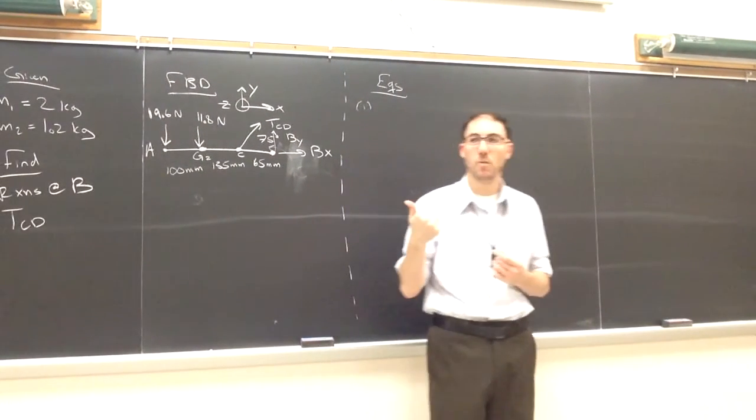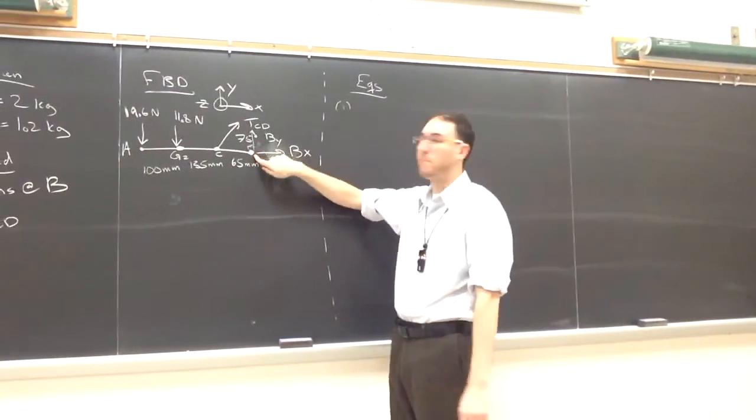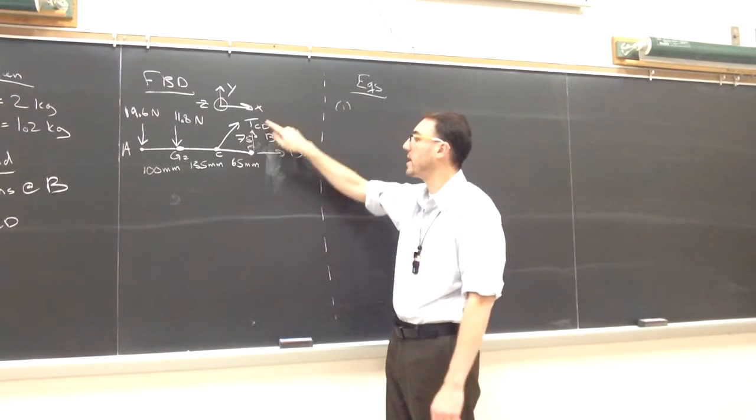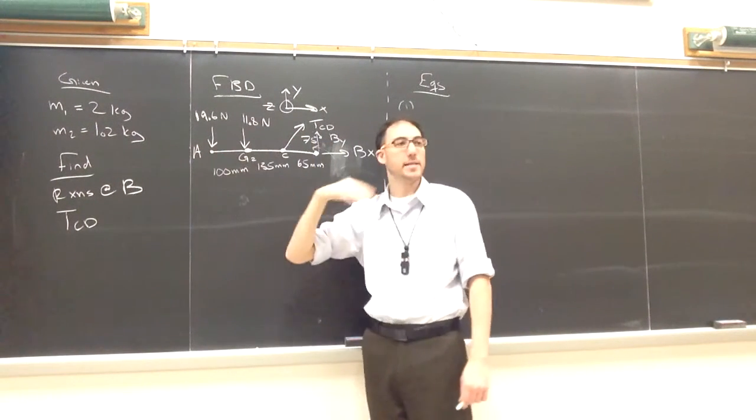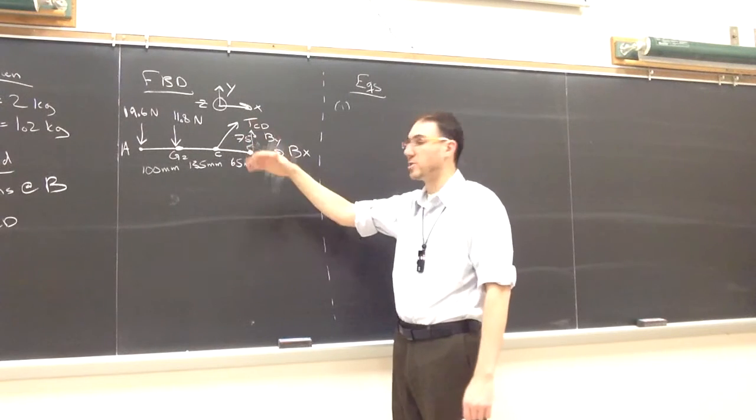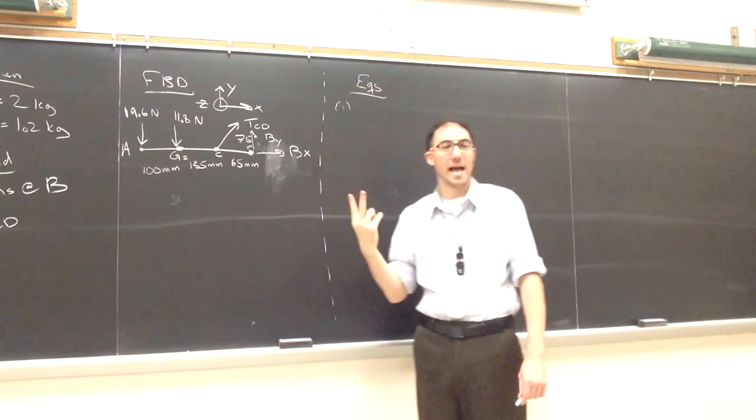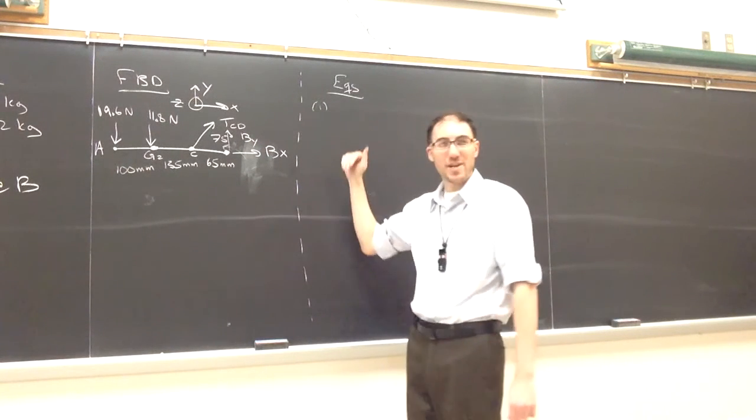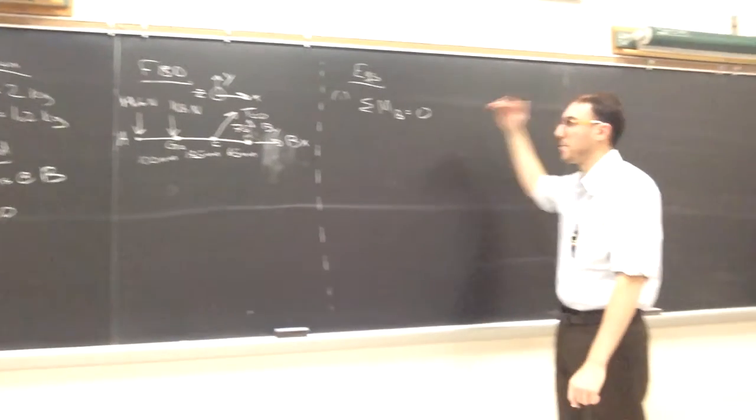If we take a moment first around what point? If we take the moment specifically around B, BX and BY don't appear in it. So from that first equation, the only unknown will be the tension in CD. If we took it around A, it's going to have BY and TCD in it. If we sum forces X, BX and TCD, two variables will be in that. If we sum forces in the Y, BY and TCD will be in that. So I'm going to start with the moment equation around B and I'll be able to get to my solve step right away on that first equation.